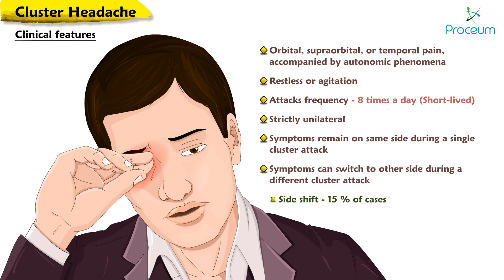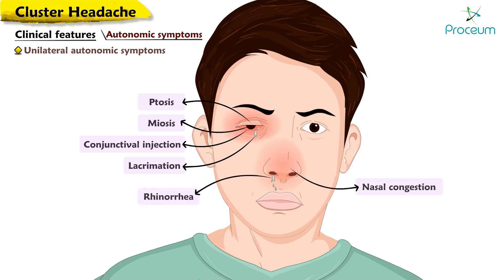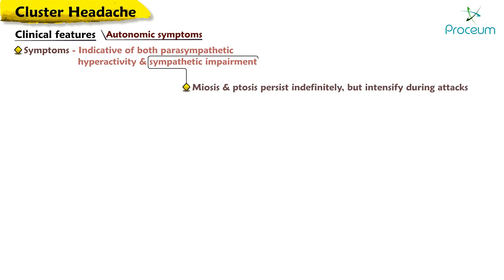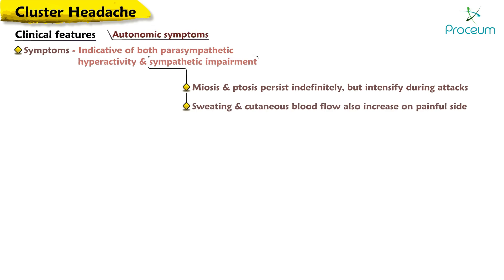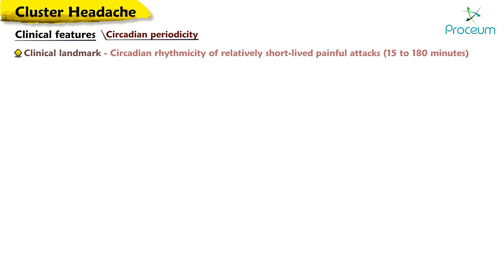In approximately 15 percent of cases, the unilateral autonomic symptoms associated with cluster headache — such as ptosis, miosis, lacrimation, conjunctival injection, rhinorrhea, and nasal congestion — occur only during the pain attack and are ipsilateral to the pain. These symptoms are indicative of both parasympathetic hyperactivity and sympathetic impairment. In some patients, the signs of sympathetic paralysis (miosis and ptosis) persist indefinitely but intensify during attacks. Sweating and cutaneous blood flow also increase on the painful side, particularly in areas of sympathetic deficit.